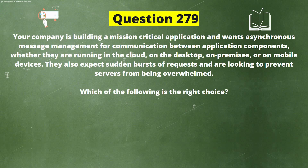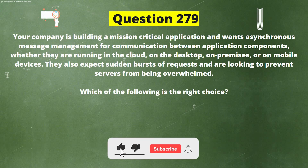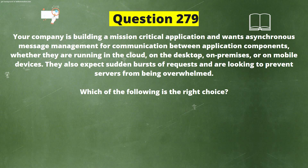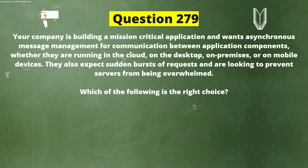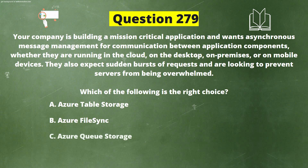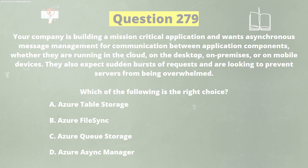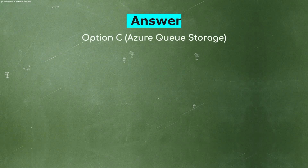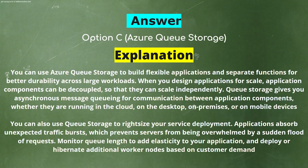Next question: Your company is building a mission-critical application involving asynchronous message management for communication between application components, whether running in the cloud, on the desktop, on-premises, or on mobile devices. They also expect bursts of requests and want to prevent servers from being overwhelmed. The options are: A) Azure Table Storage, B) Azure File Sync, C) Azure Queue Storage, D) Azure Sync Manager. The correct answer is option C, Azure Queue Storage.